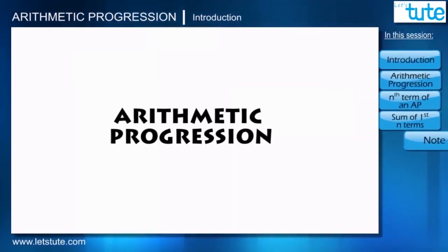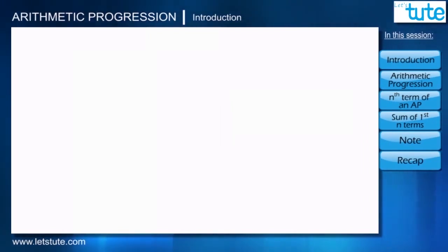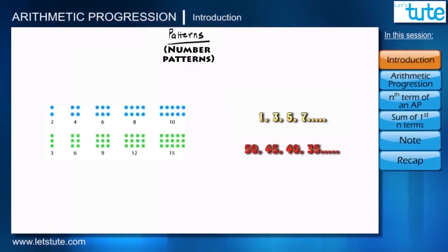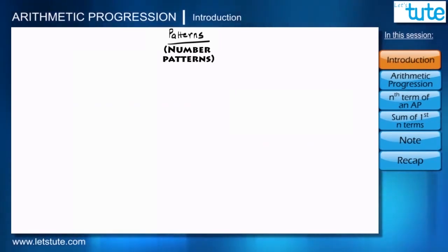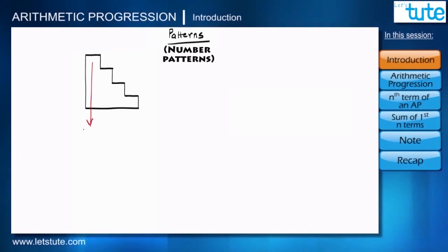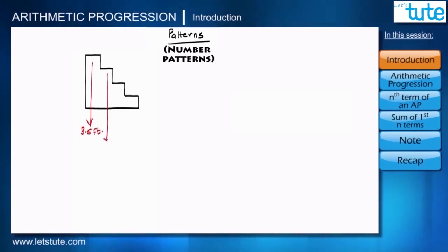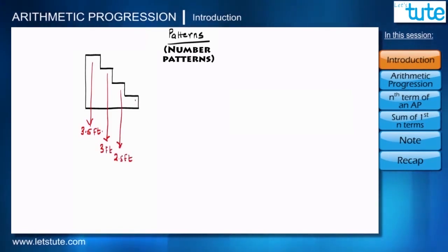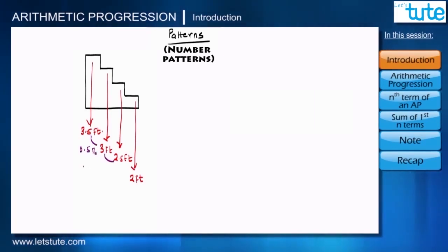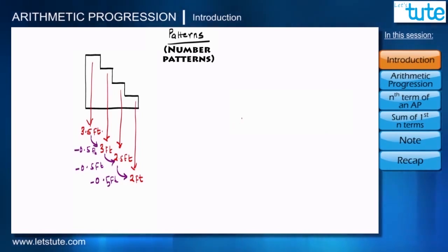Hi friends, in this session we are going to discuss about some interesting patterns. There are many things around us which follow specific patterns. For example, in a staircase, the height of the first step from the left is 3.5 feet, the second step is 3 feet, the third step is 2.5 feet, and the last step is 2 feet. Every next step is reduced by 0.5 feet.